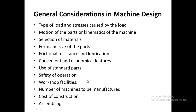Some of the general considerations in machine design include: the type of load and stress caused by the load; the movement of the different parts in the machine; the selection of material used for manufacturing the different parts; the different forms of the parts; the size of the different parts; the friction resistance and lubrication properties of the material; convenience and economy; usage of standard parts; and safety of operation.